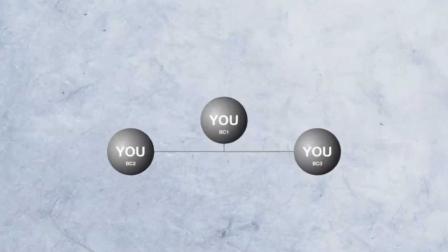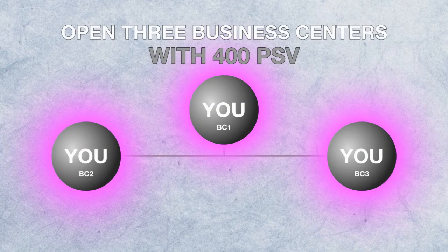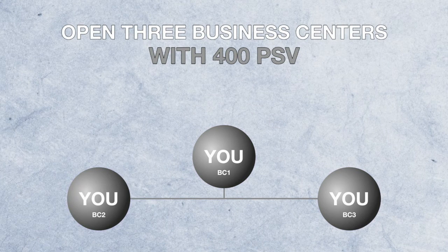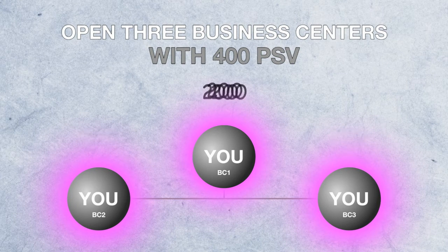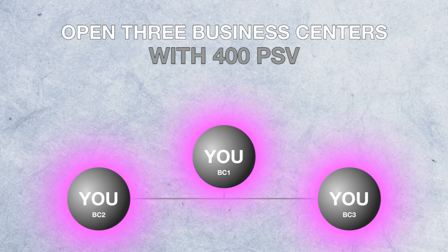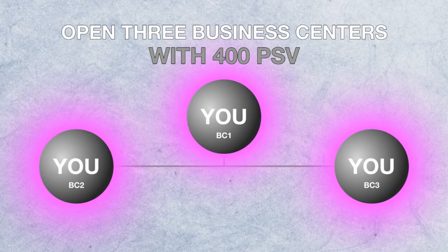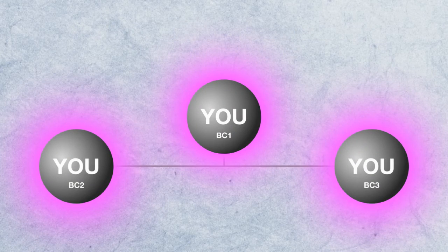As a new associate, you can open three business centers with 400 sales volume points. Normally, each business center requires 200 points to open, which means that you're opening three business centers with the sales volume required for two. Keep in mind, the option to open three business centers with only 400 points is exclusively for new associates.